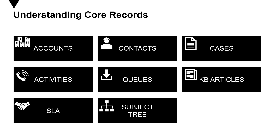Activities are interactions between customers and the business, and they are based on incidents. Every activity should be resolved in order to close an incident. Queues are the place or location where activities and cases are stored to be processed, and queues are created based on users and teams.